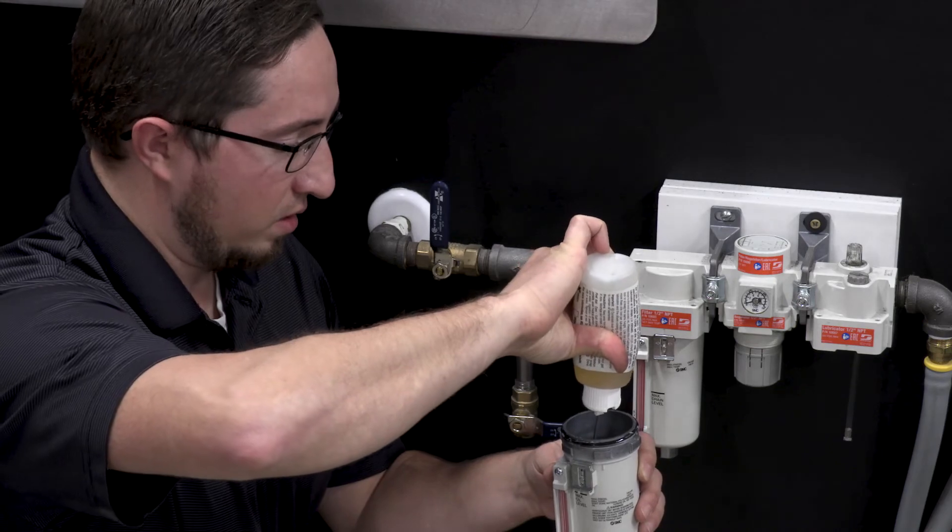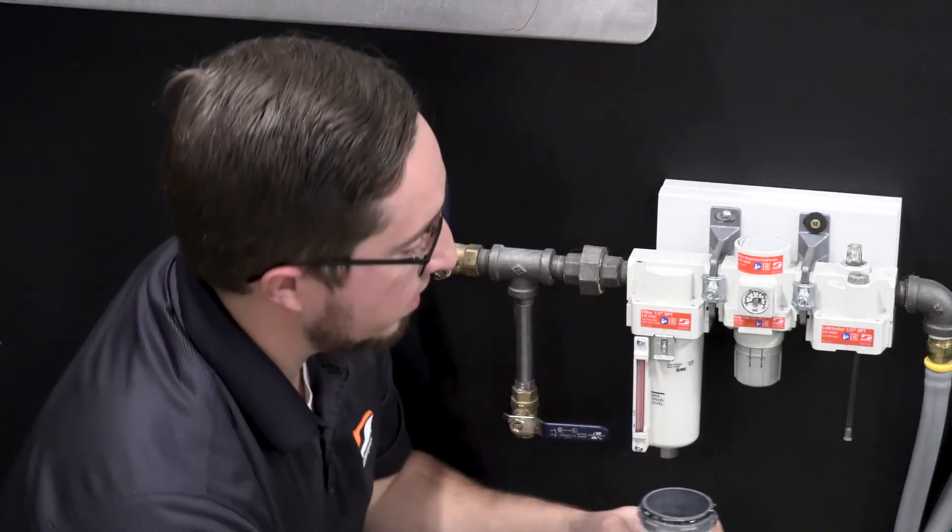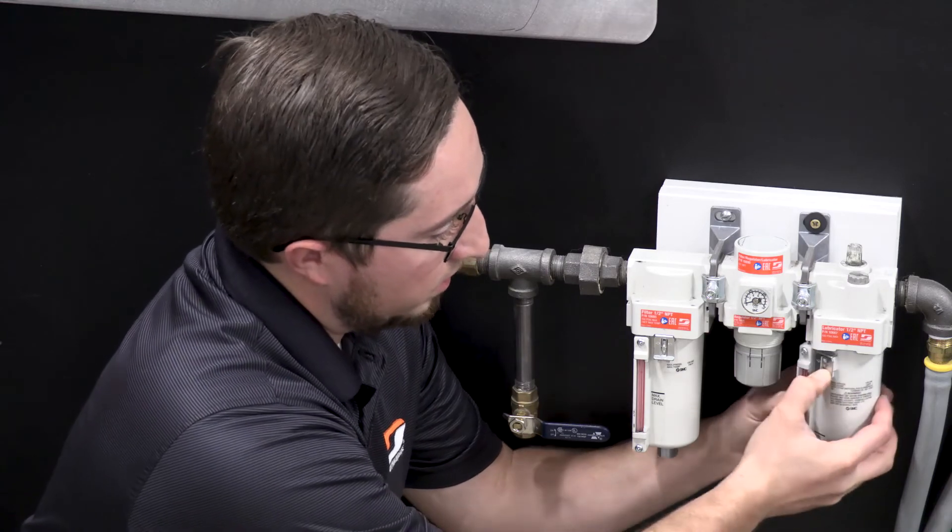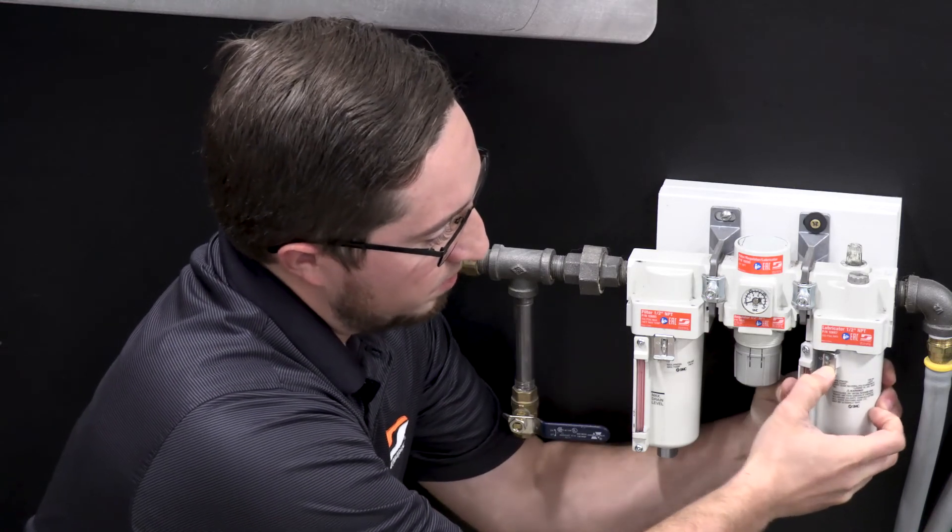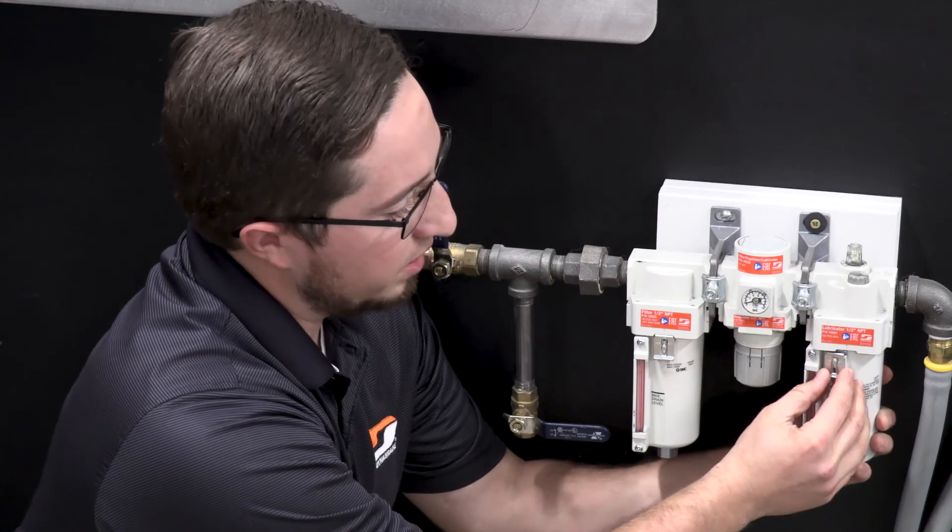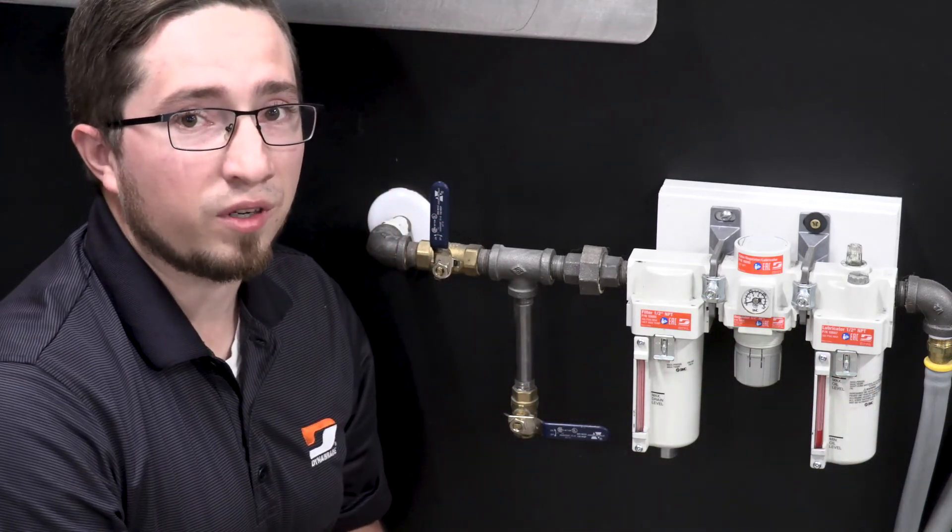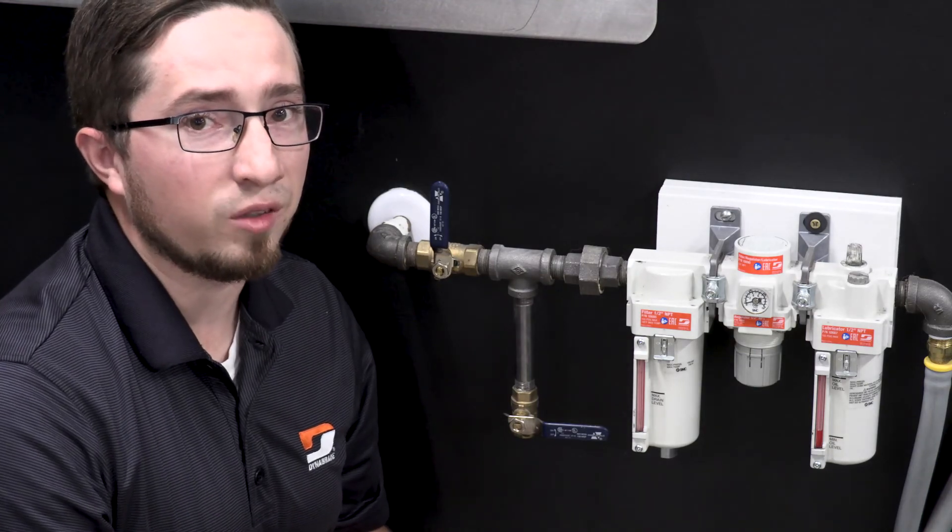Then simply depress the tab, line these back up, line the tabs back up, and then turn to where your silver tab is centered and locked in. And now your FRL is ready to go. Your tools will be able to have clean air and lubrication supplied.